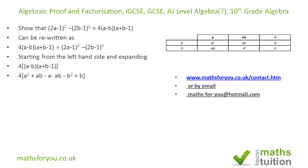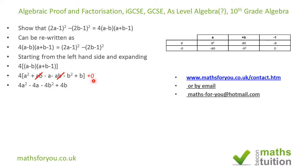Now I'm going to do something that might seem silly — I'm going to add plus zero. Adding plus zero makes no difference to the expression at all. I can write plus zero as minus 1 plus 1, because I can see ones in the expression: there's a 1 there, minus 1 there, minus 1 there, and 1 there.